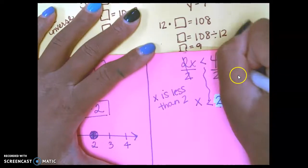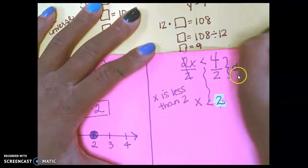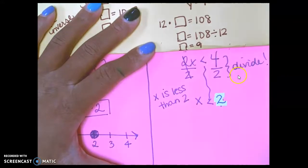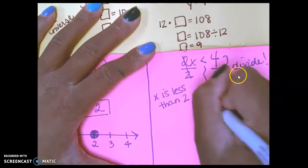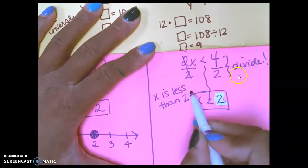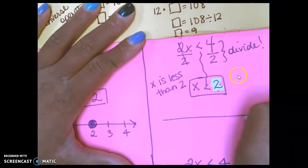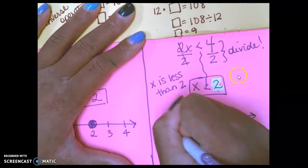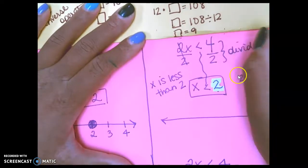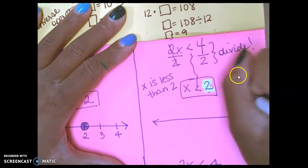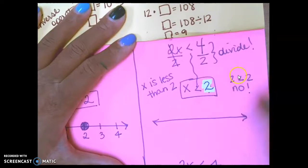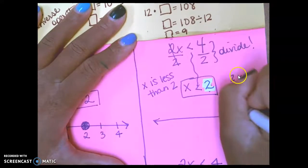Because, again, here, I have to divide. Well, this is my solution. And this is my inequality. X is less than 2. So, because X is less than 2, I cannot say 2 is less than 2. No. So, I have to use an open circle.